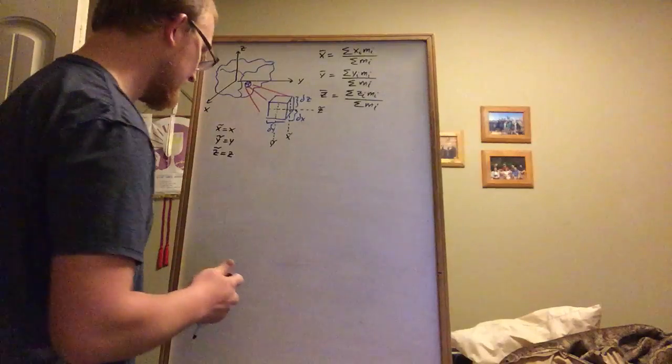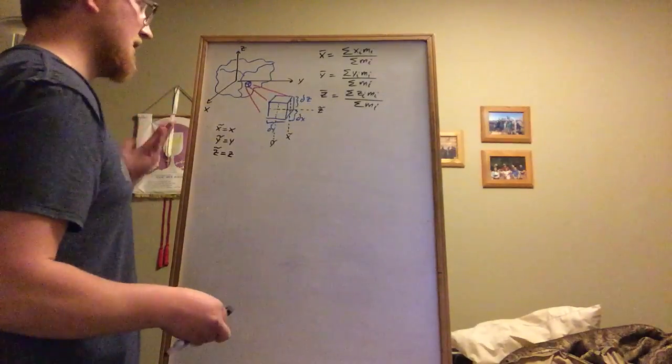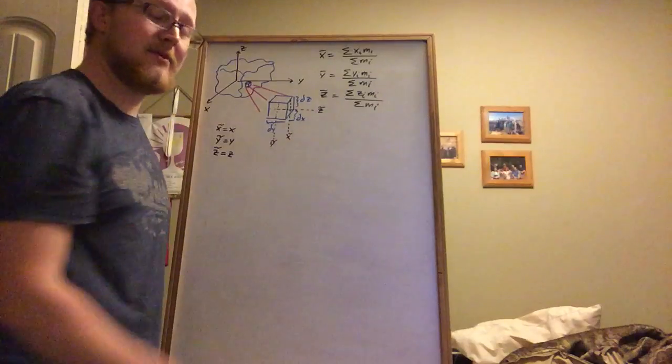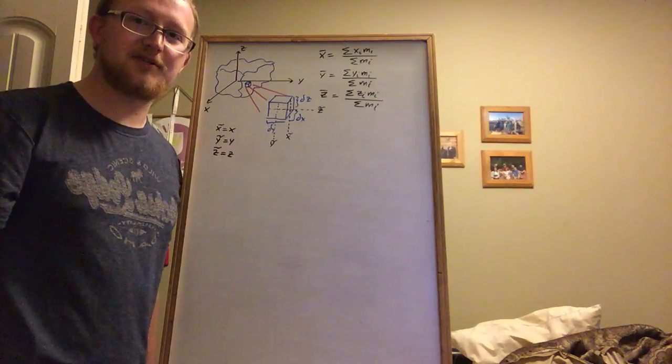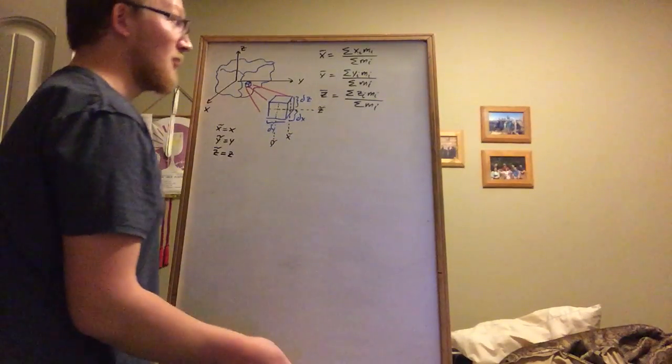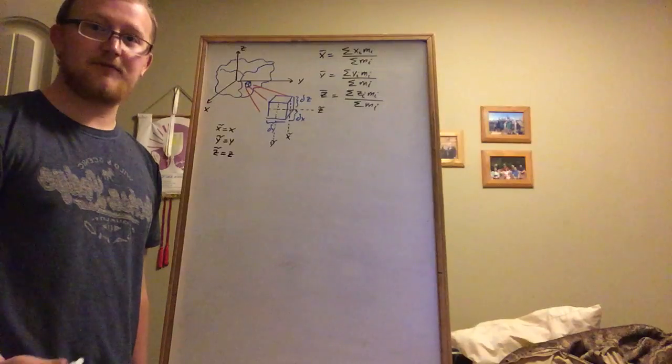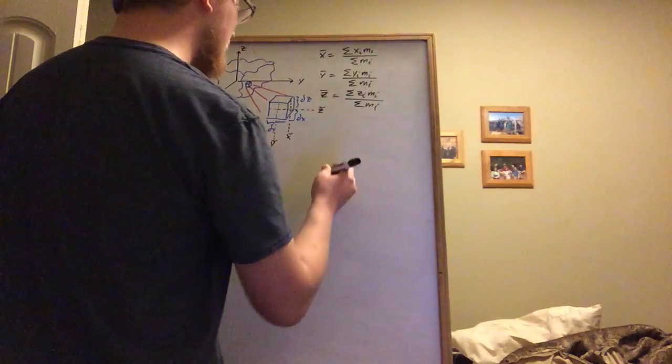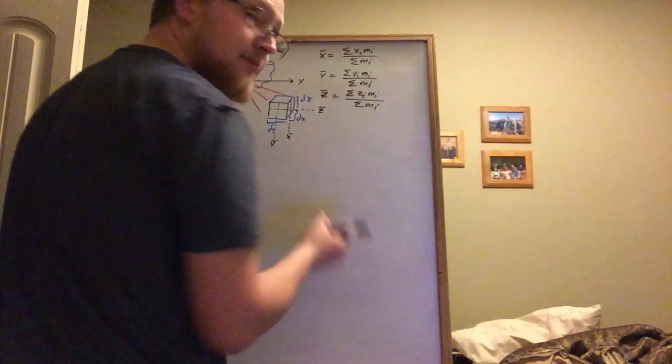Z tilde is just z, which is the measure from the origin to the z component of wherever the cube is lying in this 3D space. So now that we know that, remember we can apply these one-dimensional center of mass equations for particle systems and we can write them as infinite sums for rigid bodies. So let's start with x bar.